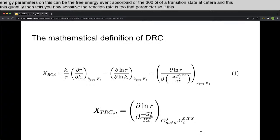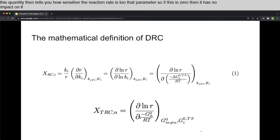And this quantity then tells you how sensitive the reaction rate is to that parameter. So if this is zero, then it has no impact on it. If it's one, it tells you that it is an important step. And if it's minus one, it tells you that it's an inhibiting step.